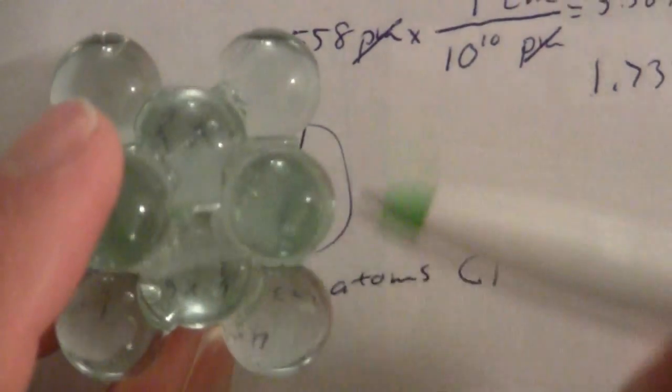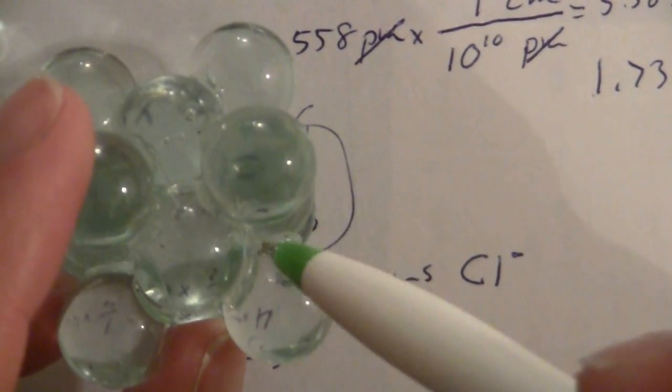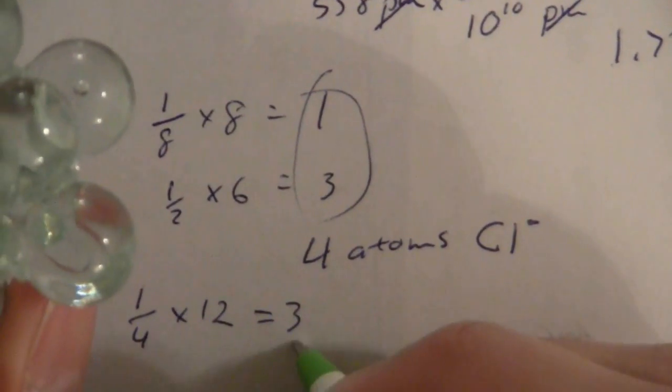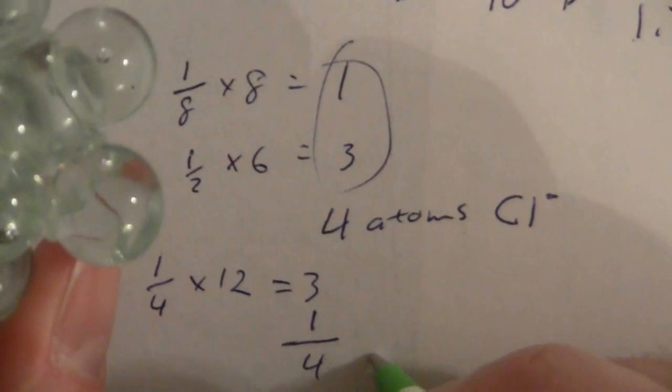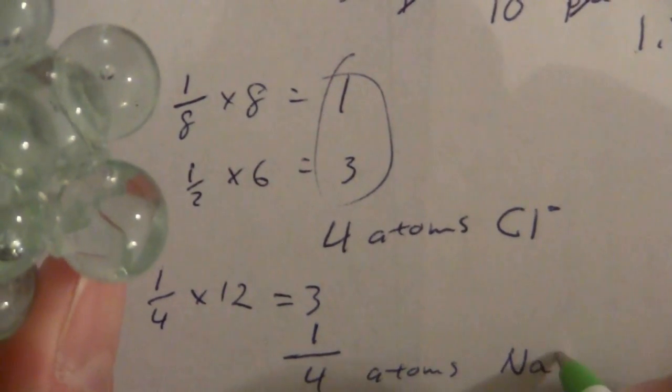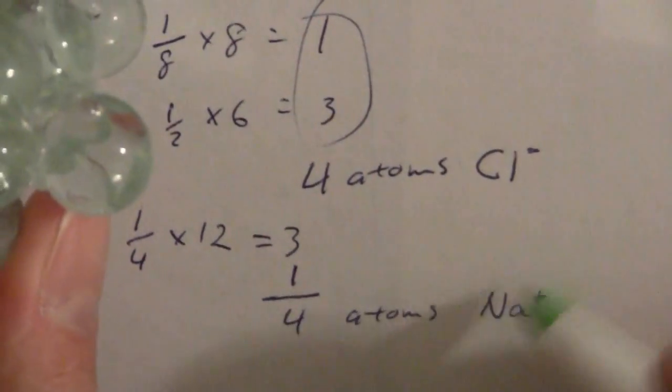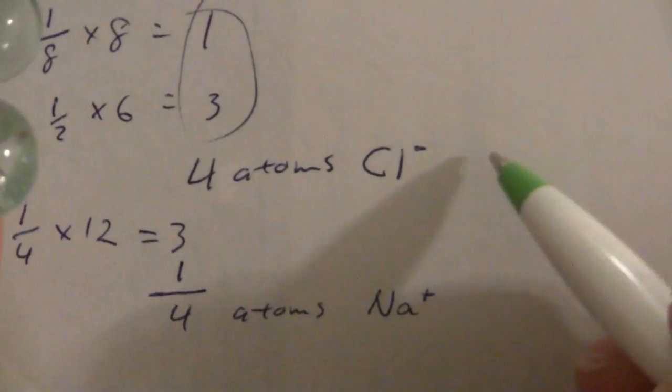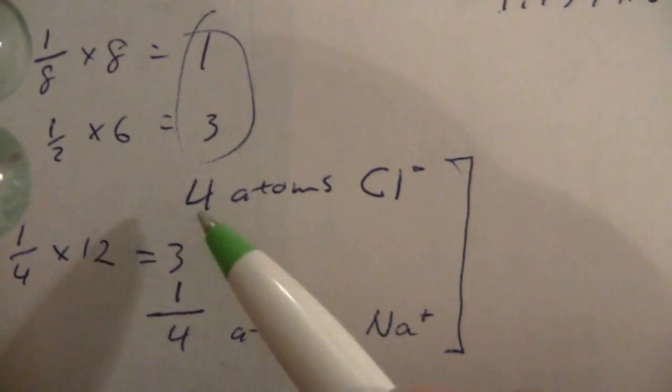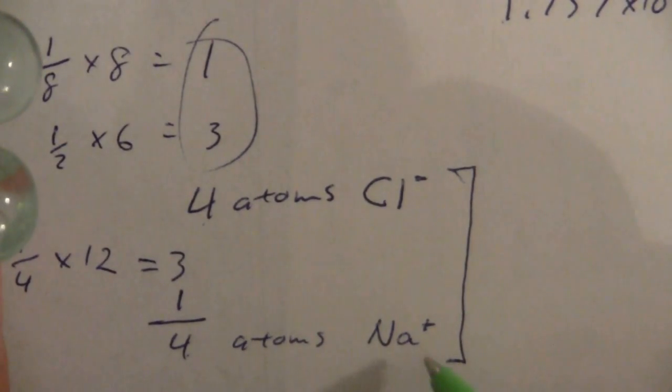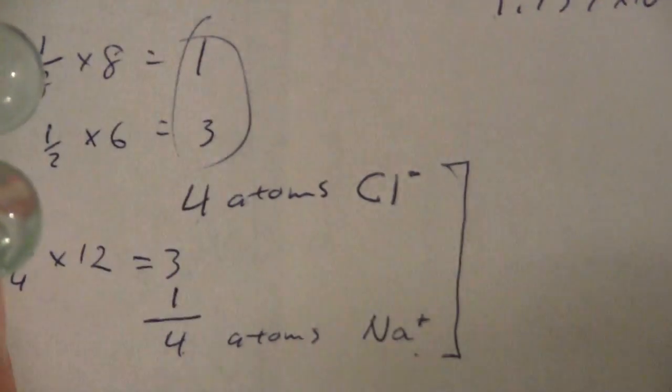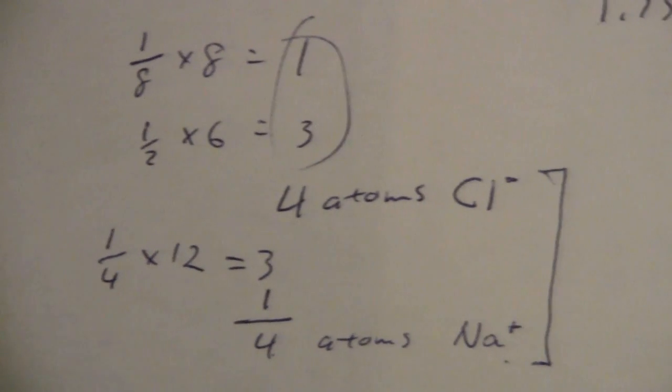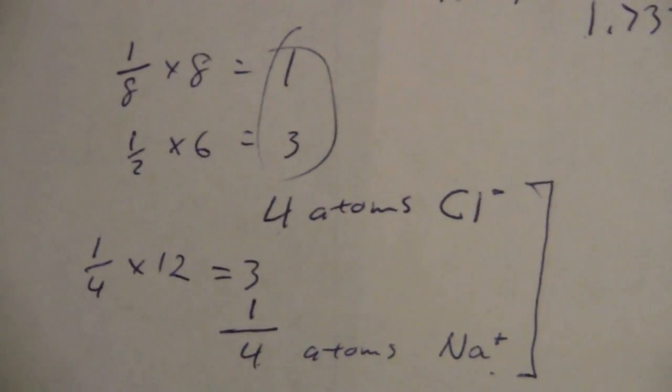And then let's not forget that there is a sodium ion right in the very center of this unit cell as well, and so we have four atoms of sodium, or four ions, really. So, for the mass, we need to add up four chloride ions and four sodium ions, and that will give us the mass within the unit cell.